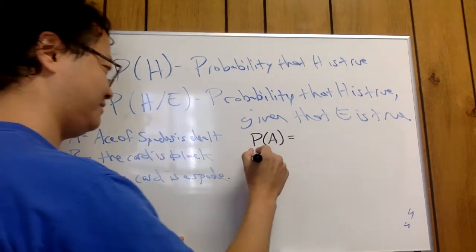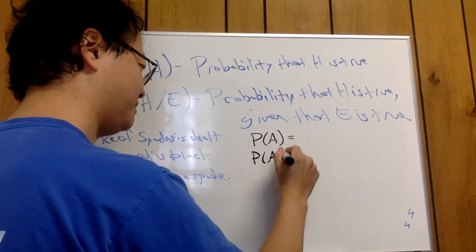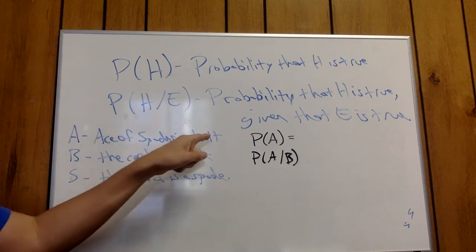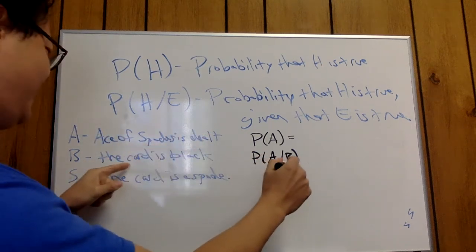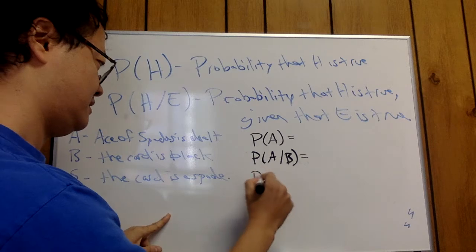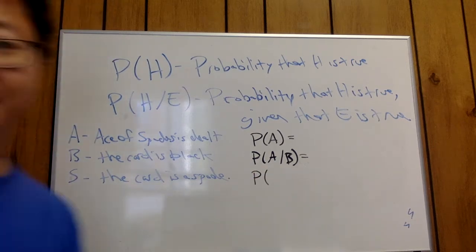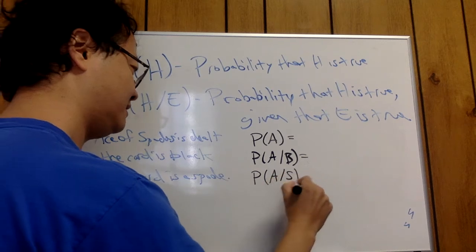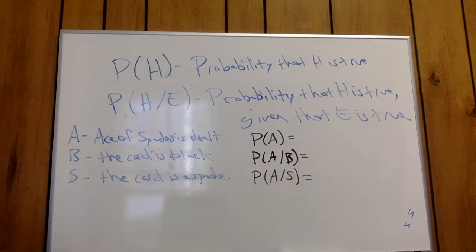Next, I'm going to be asking you to figure out what's the probability of A given B. So what's the probability that the ace of spades is dealt, given that the card is black? And then probability, and lastly, what's the probability that the ace of spades is dealt, given that the card is a spade, okay?